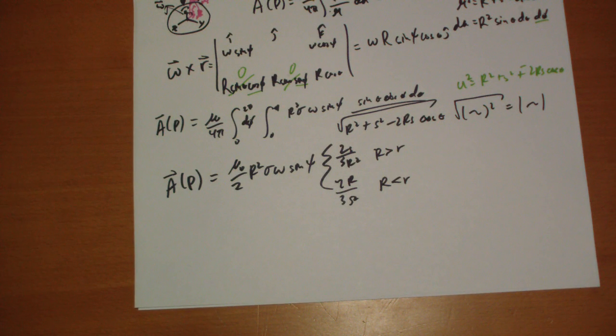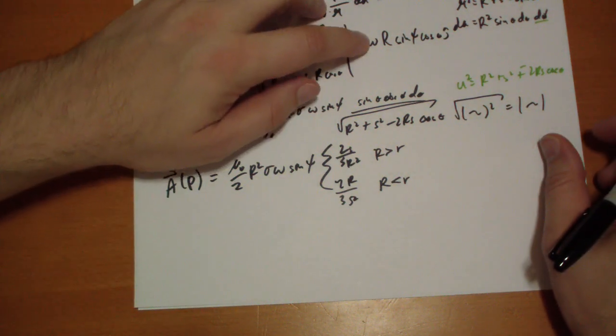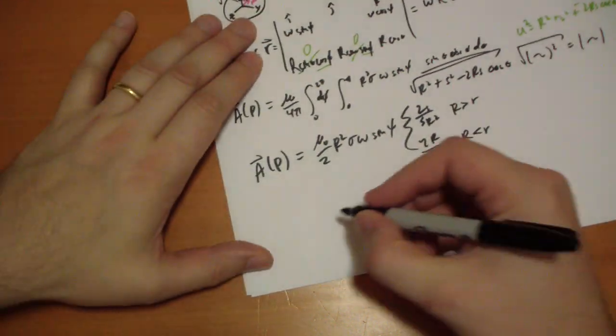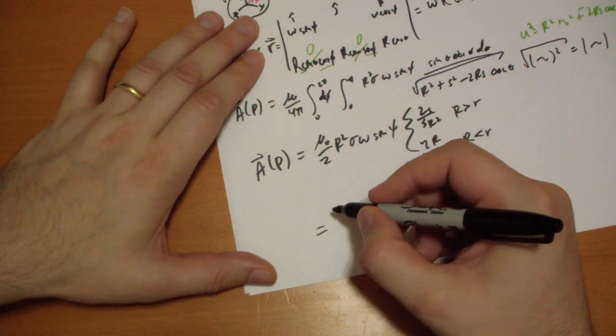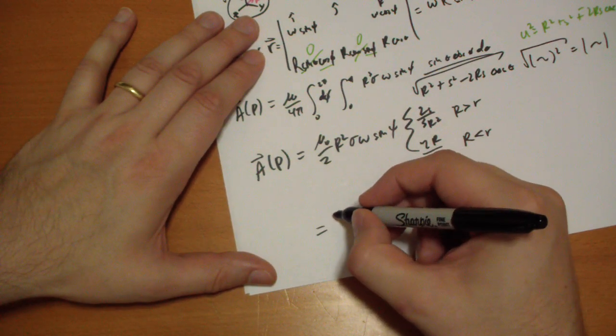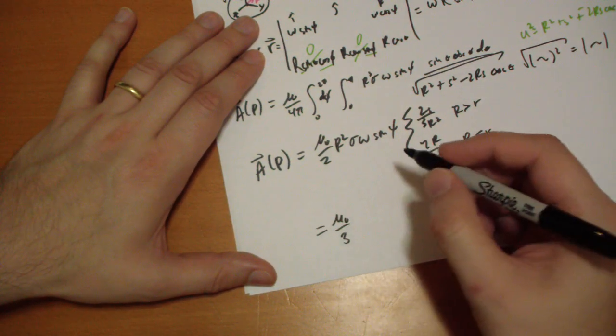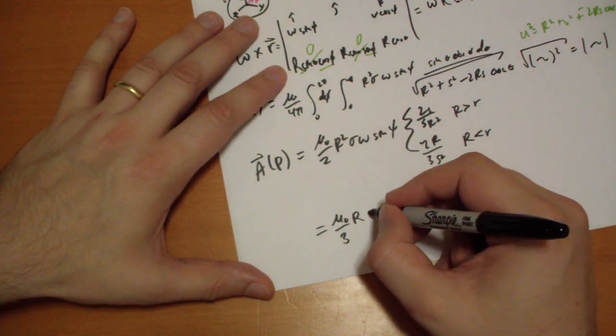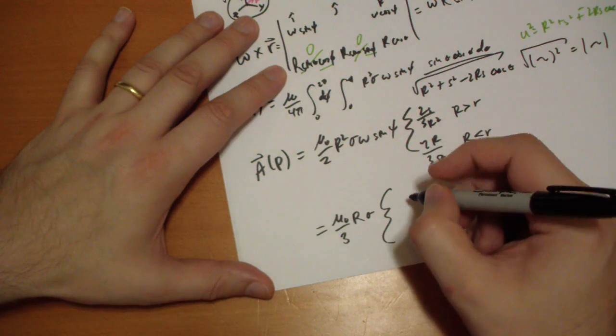Now, at this point, he substitutes omega cross S back in so that he can change his coordinate system. And what's omega cross S? That's omega R sine C. So he ends up with this. So he has mu naught over 3 as R as a constant sigma as a constant multiplying factor.